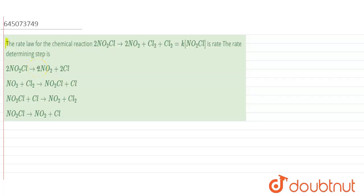Hello everyone, so in this question it is given that the rate law for the chemical reaction 2NO2Cl gives 2NO2 plus Cl2 plus Cl2. So here if you see, there is one extra Cl2 written, so this is not required.